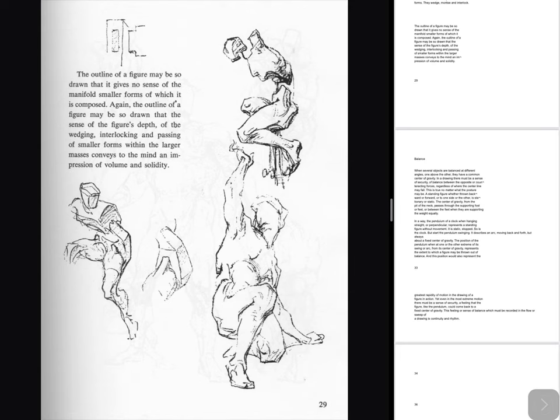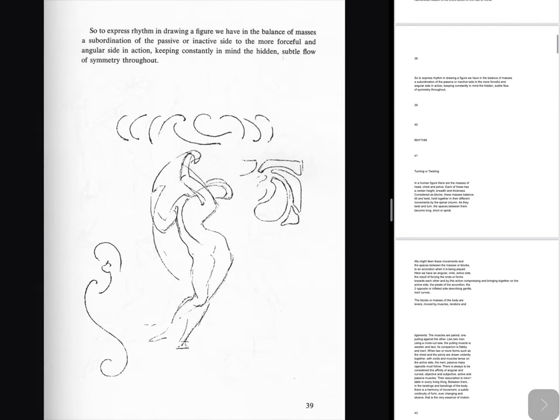Rhythm: The consciousness or idea of rhythm cannot be traced to any period, or to any artist or group of artists. We know that in 1349 a group of Florentine artists formed a society for the study of the chemistry of colors, the mathematics of composition, and that among these studies was the science of motion. But rhythm was not invented. It has been the measured motion of the universe since the beginning of time. There is rhythm in the movement of the sea and tides, stars and planets, trees and grasses, clouds and thistledown. It is a part of all animal and plant life. It is the movement of uttered words, expressed in their accented and unaccented syllables, and in the grouping and pauses of speech. Both poetry and music are the embodiment, in appropriate rhythmical sound, of beautiful thought, imagination or emotion. Without rhythm there could be no poetry or music. In drawing and painting there is rhythm in outline, color, light and shade. The continuous slow motion picture has given us a new appreciation of rhythm in all visible movement. In pictures of pole vault or steeplechase we may actually follow with the eye the movement of every muscle and note its harmonious relation to the entire action of the man or horse. So to express rhythm in drawing a figure we have in the balance of masses a subordination of the passive or inactive side to the more forceful and angular side in action, keeping constantly in mind the hidden, subtle flow of symmetry throughout.